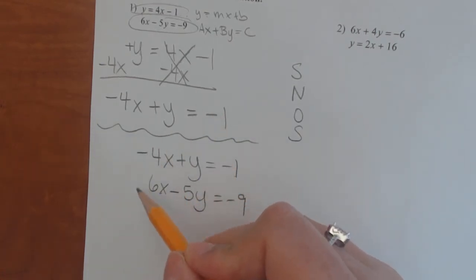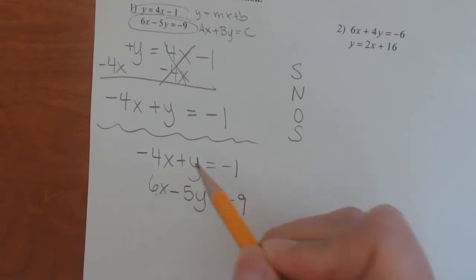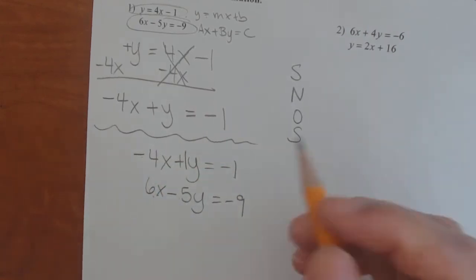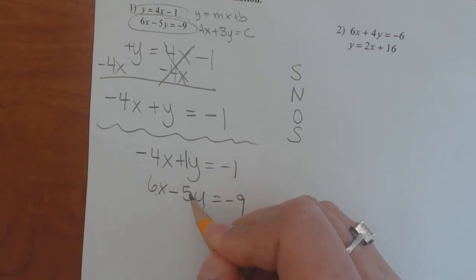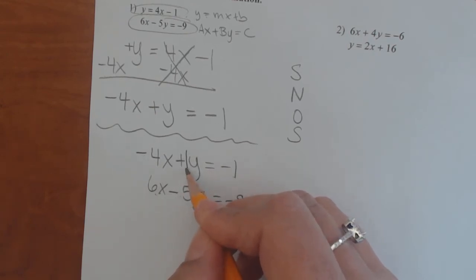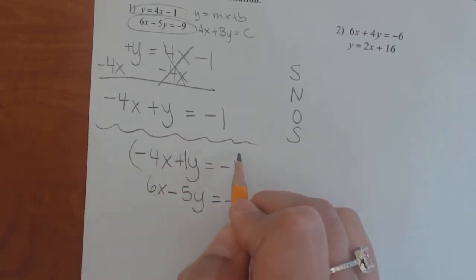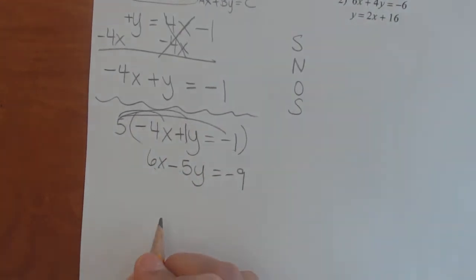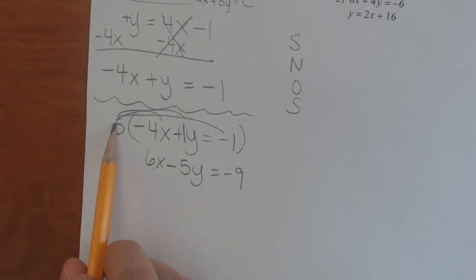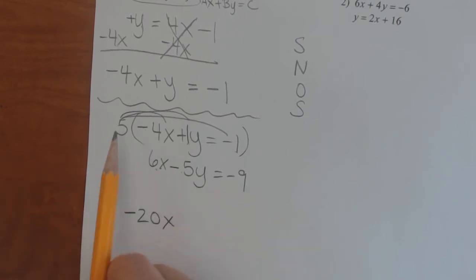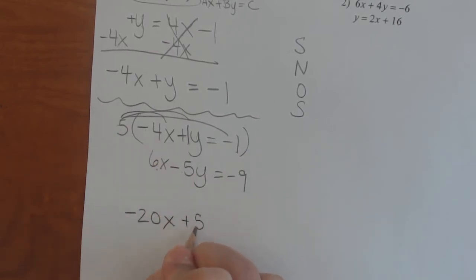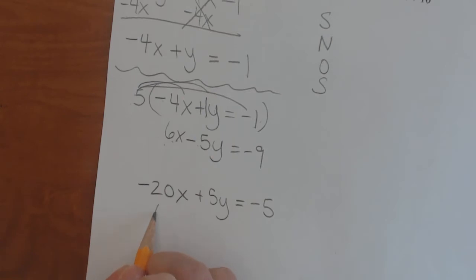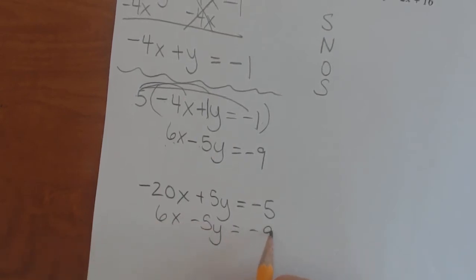Looking at the x variables: opposite signs — positive and negative — but the numbers aren't the same. Looking at the y variables: positive and negative, awesome. I'll put a 1 in because there is a 1 there. So I have 1 and 5 with opposite signs. It'd be easy to turn 1 into 5 by multiplying by 5. So I'm going to multiply the whole top equation by 5: 5 times negative 4 gives negative 20x, 5 times 1y gives positive 5y, and 5 times negative 1 gives negative 5. The second equation, 6x minus 5y equals negative 9, stays the same.